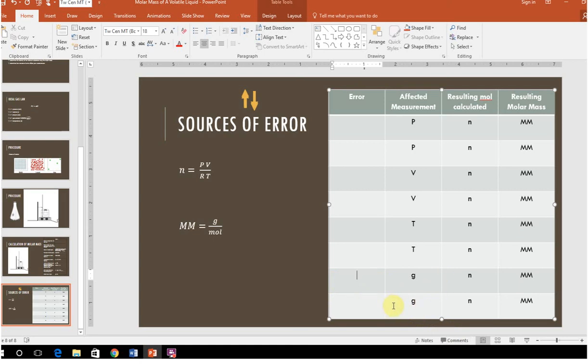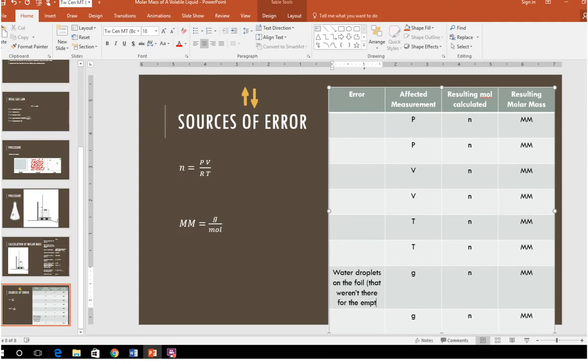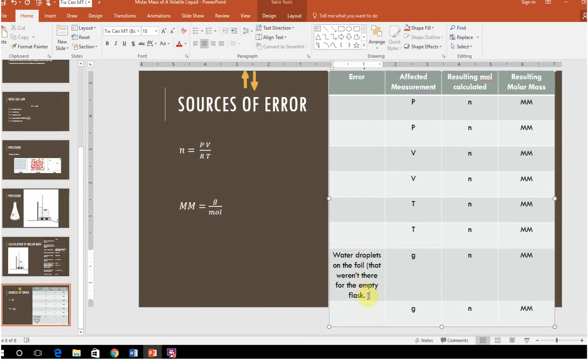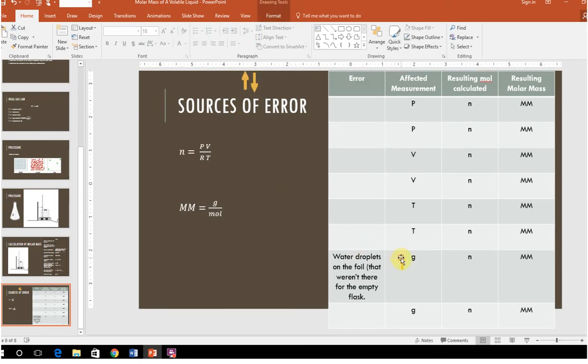So let's just look at grams. Maybe when I went to measure my grams, there were water droplets on the foil that weren't there for the empty flask. So this is something that is going to be contributing to a mass that is not really from the vapor itself. It's not coming from anything else, but it's contributing to the mass. So it's going to make my grams look too high.